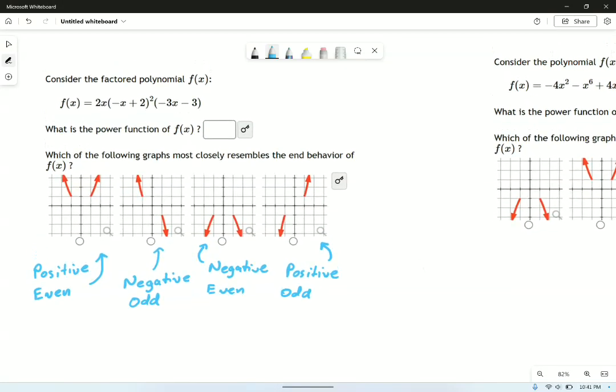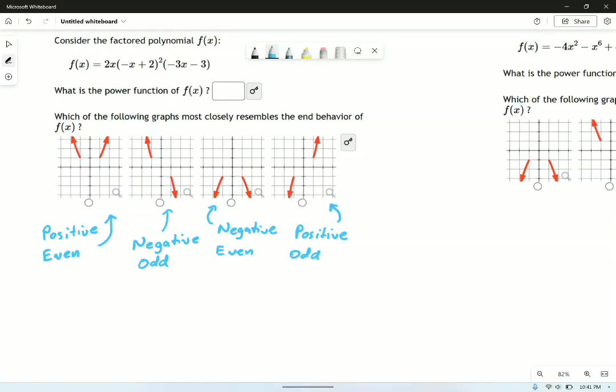And the reason they're named those things is because they depend on the power function of our polynomial. If the power function is positive even, it goes up and up. What I mean by positive even is things like 2x to the fourth, or 3x squared, or 17x to the sixth. You notice all of these are positive coefficients and they all have even exponents.